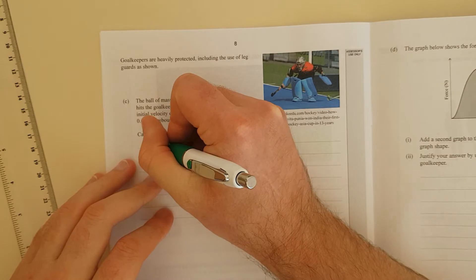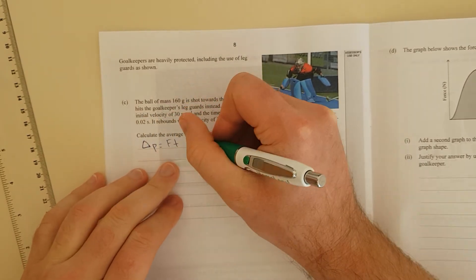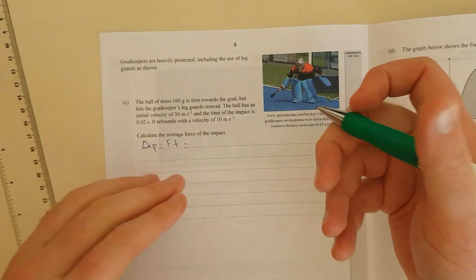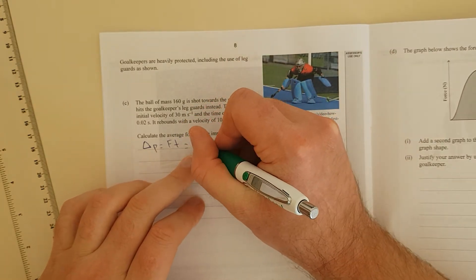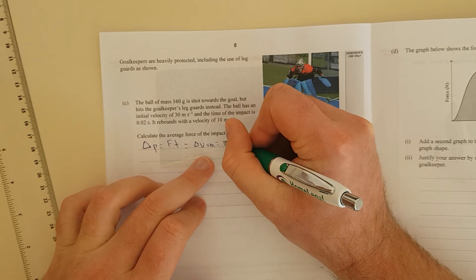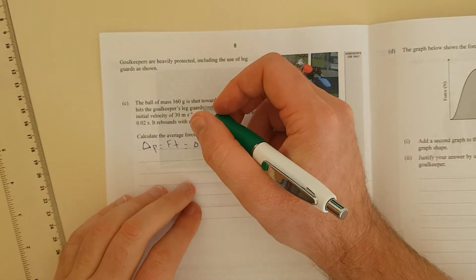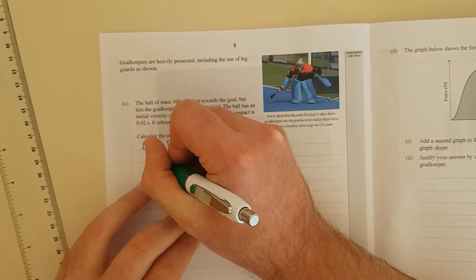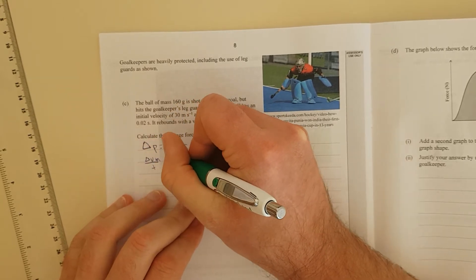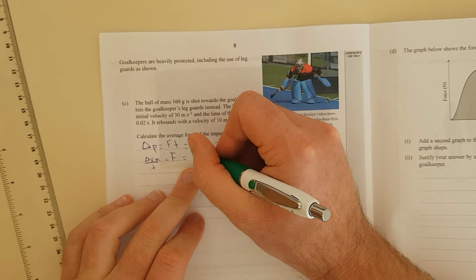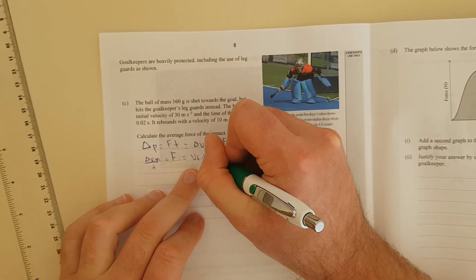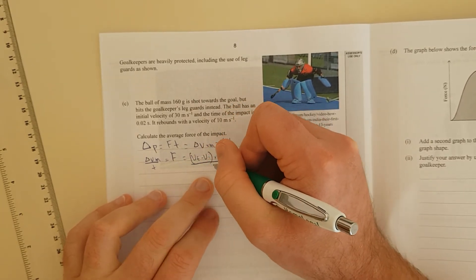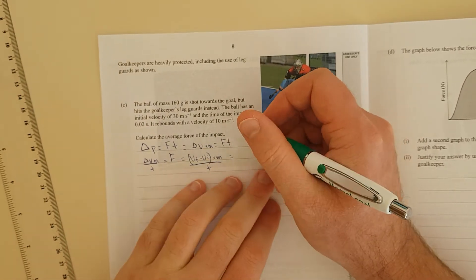In your formula sheet, you'll have change in momentum is equal to force times time. And that is change in momentum. You can either change the mass or the velocity. You can't change them both at the same time. Otherwise, you get wonky things happening. We know the velocity is changing. So, it's change in velocity times mass equals force times time. And we're trying to find the average force. So, we'll just divide both sides by time. So, we get change in velocity times mass divided by time equals force. Now, we need to write this slightly more succinctly. So, we need to say velocity final minus velocity initial, brackets around that, times the mass, divided by the time. Now, that is equal to.